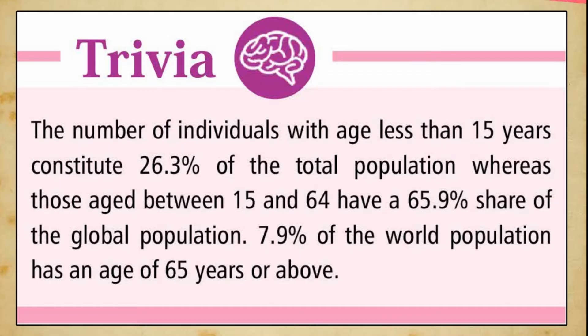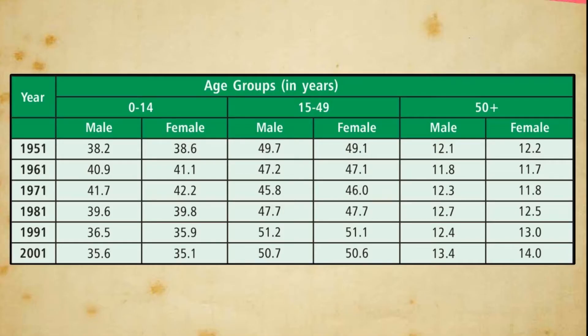Trivia: individuals aged less than 15 years constitute 26.3% of the total global population, while those aged between 15 and 64 have a 65.9% share. 7.9% of the world population is aged 65 years and above. The government also has to make arrangements to train people who have reached the working age group.